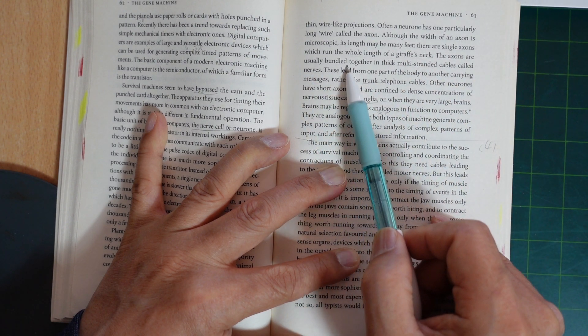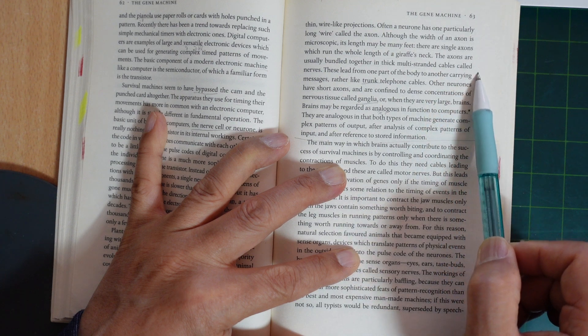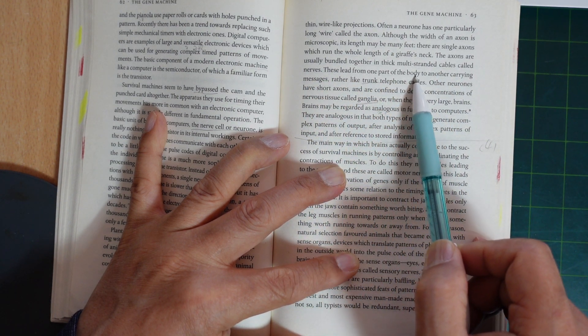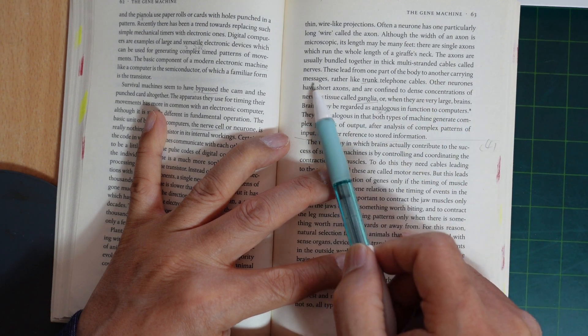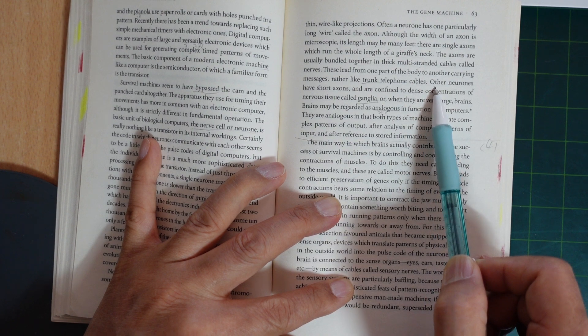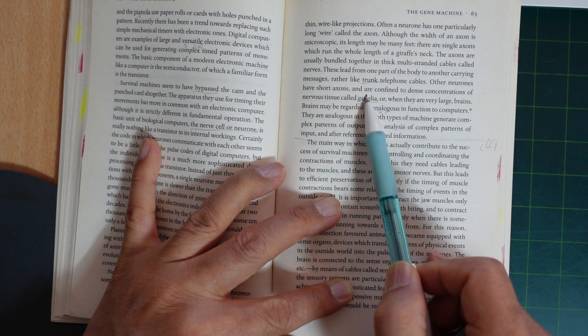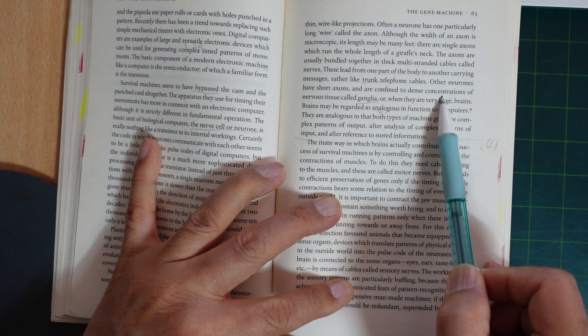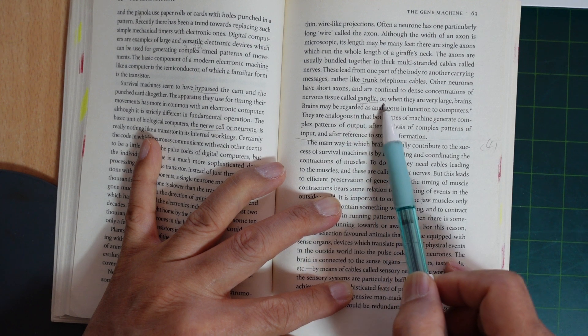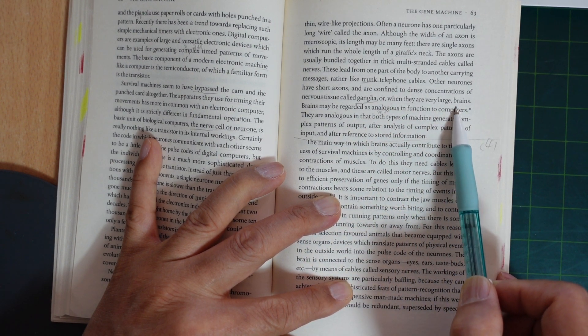The axons are usually bundled together in thick, multi-stranded cables called nerves. These lead from one part of the body to another, carrying messages, like trunk telephone cables. Other neurons have short axons and are confined to dense concentrations of nervous tissue called ganglia, or when they are very large, brains.